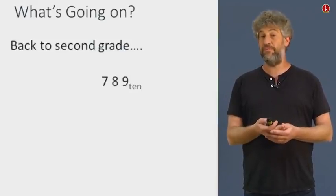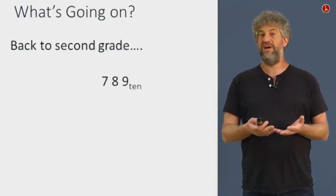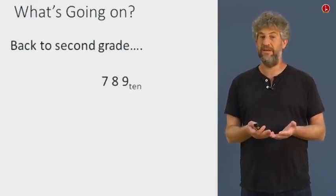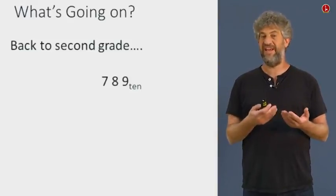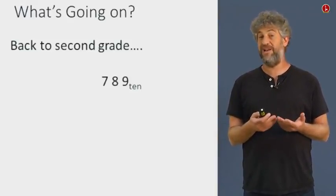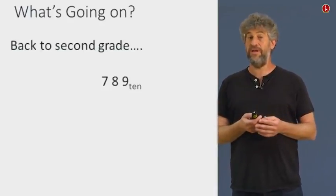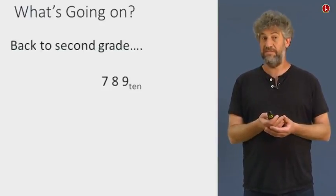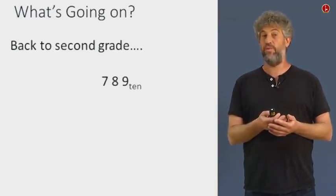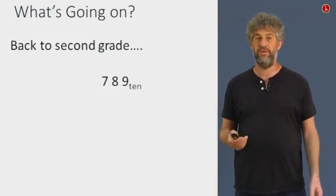When we learned about decimal numbers, we see 789. What does that mean? What do the digits 7, 8, and 9 have to do with the value of the number 789? Well, we learned that we have the positional system, where the rightmost digit is the ones, the next one is the tens, the next one is the hundreds.